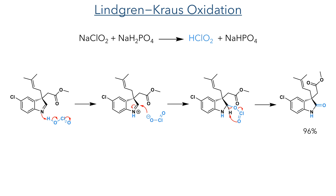The product of this reaction was then subjected to a Lindgren-Krauss oxidation, which is a variation of the Pinnick oxidation. Sodium hypochlorite first reacts with monosodium phosphate to generate chlorous acid. This then protonates the nitrogen atom, forming an iminium species that is attacked by the chlorite. This intermediate undergoes a pericyclic fragmentation, forming a carbon-oxygen double bond and eliminating hypochlorous acid. This hypochlorous acid is then scavenged by reaction with 2-methylbutene.